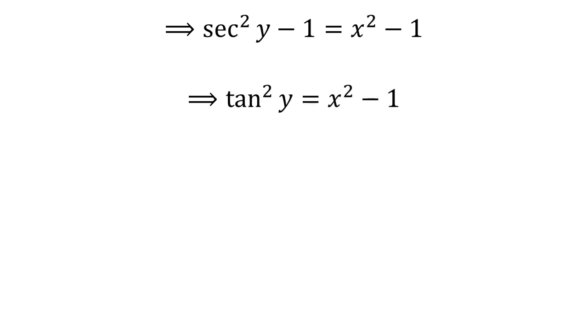As square of secant of y minus 1 is equal to square of tangent of y, by application of the famous trigonometry identity square of tangent of y plus 1 equals square of secant of y, we get square of tangent of y is equal to square of x minus 1.